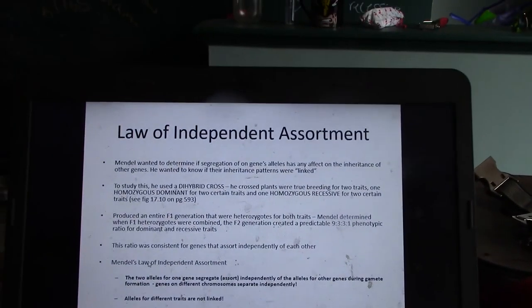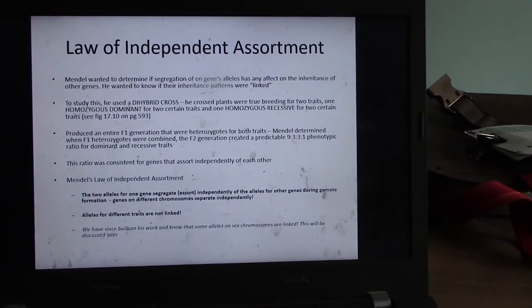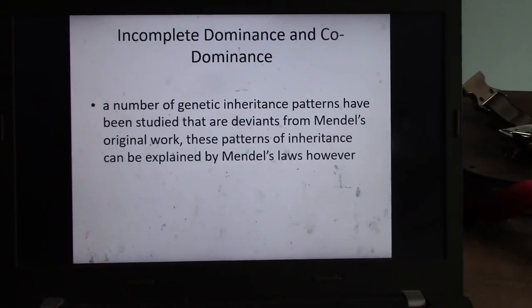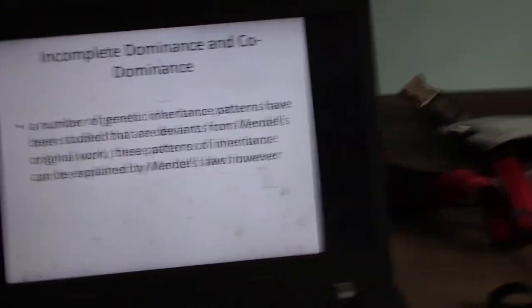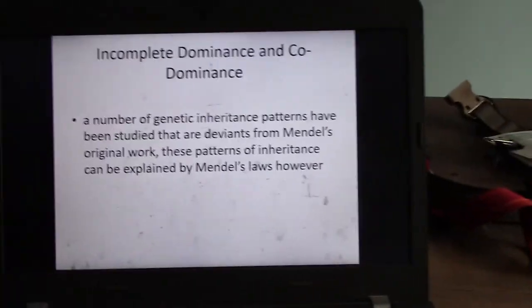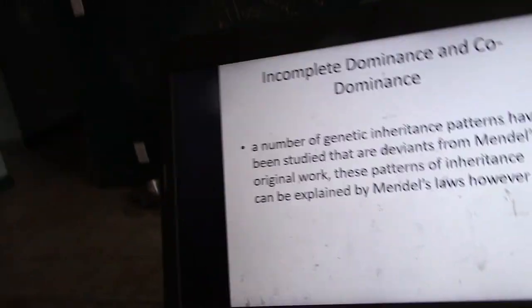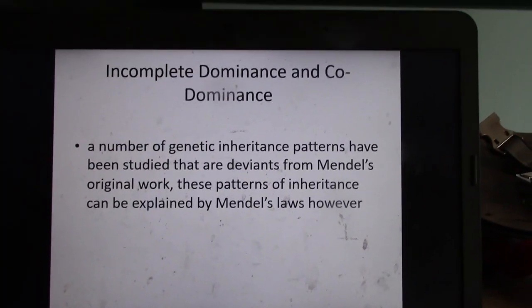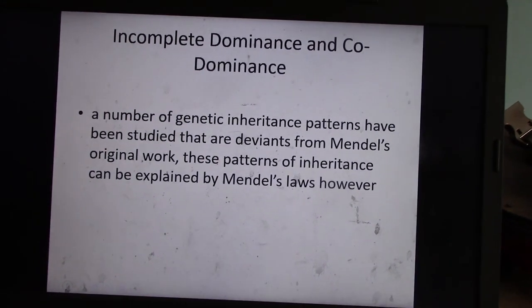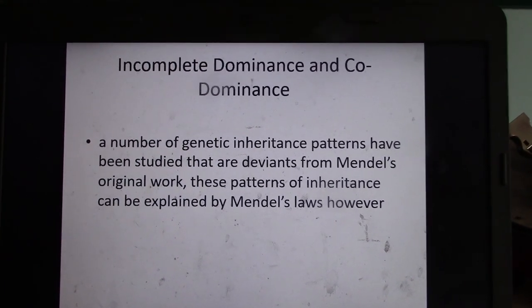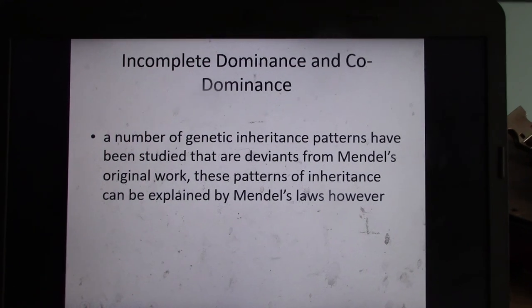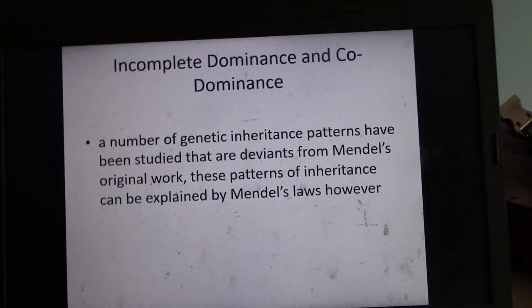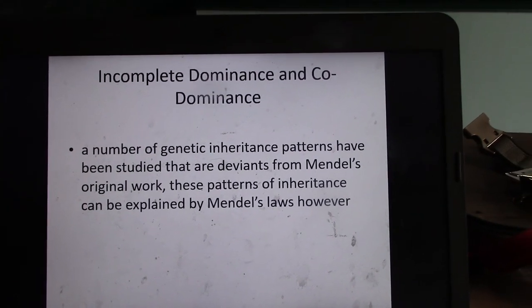So independent assortment talks about different traits. This is dealing with more dihybrid crosses. I'm not going to talk about dihybrid crosses today. I'm going to skip over that. I'm going to do everything dealing with monohybrid crosses for this lecture today. So we're just going to look at one trait. So there are some extensions off of Mendel's laws here, incomplete and codominance. So a number of genetic patterns have been studied that are deviant from Mendel's original work. These patterns of inheritance can be explained by Mendel's laws.